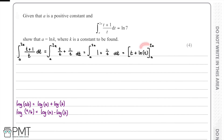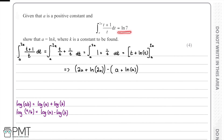We substitute 2a in and then subtract the expression with a substituted in. This gives us (2a + ln(2a)) minus (a + ln(a)). We go back to the question and recall that this is all equal to ln(7) since we have completed the integration.